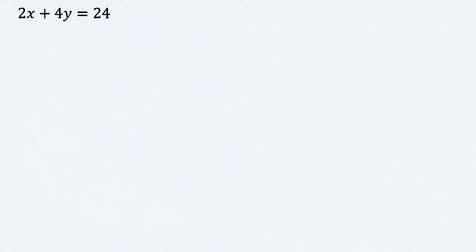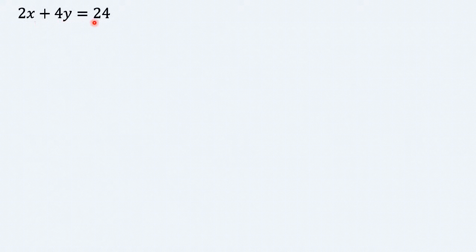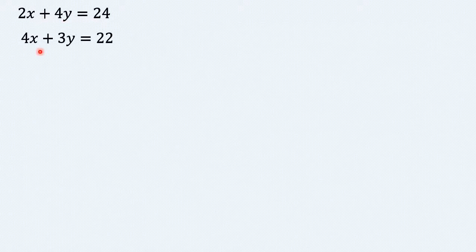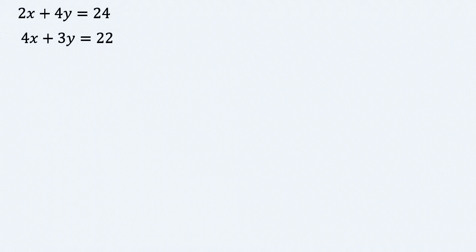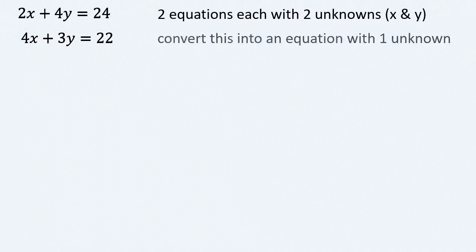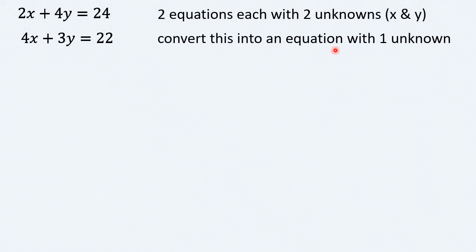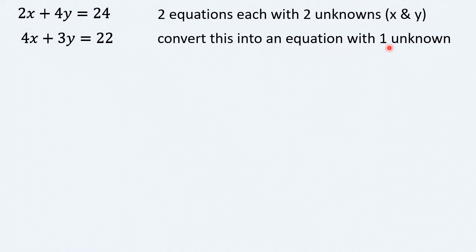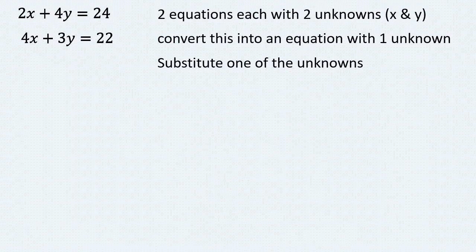The question says 2x plus 4y equals 24 and 4x plus 3y equals 22. Now we have two equations, each with two unknowns, x and y. We would like to convert this into a single equation with one unknown by substituting one of these unknowns.